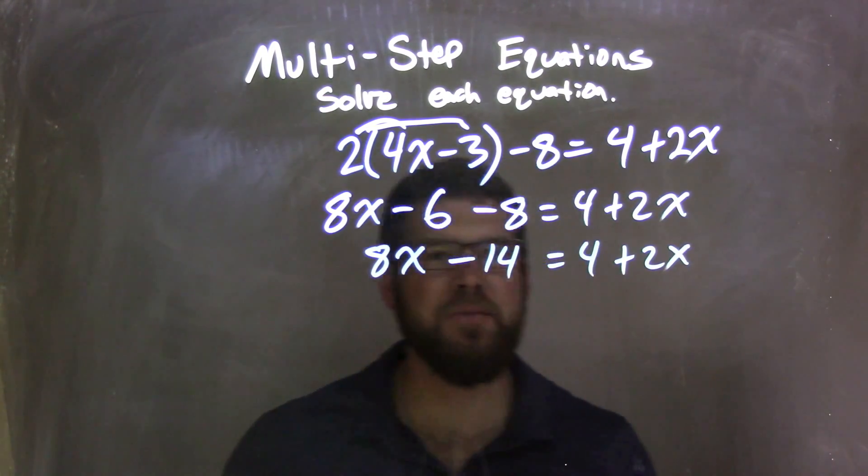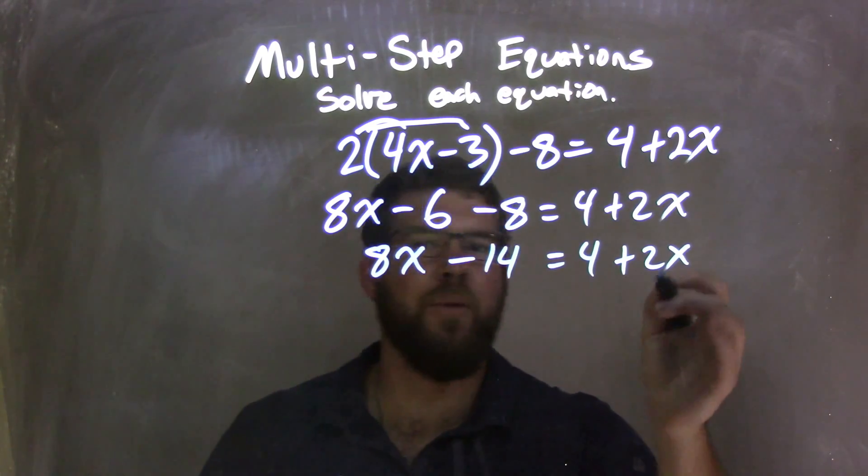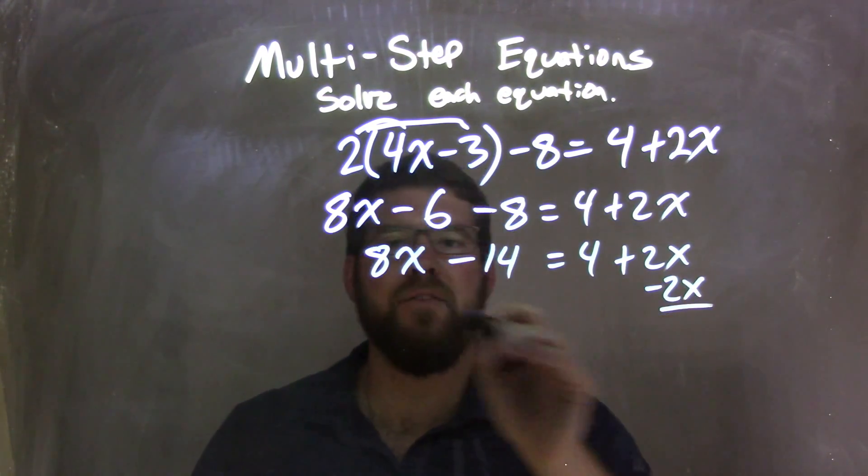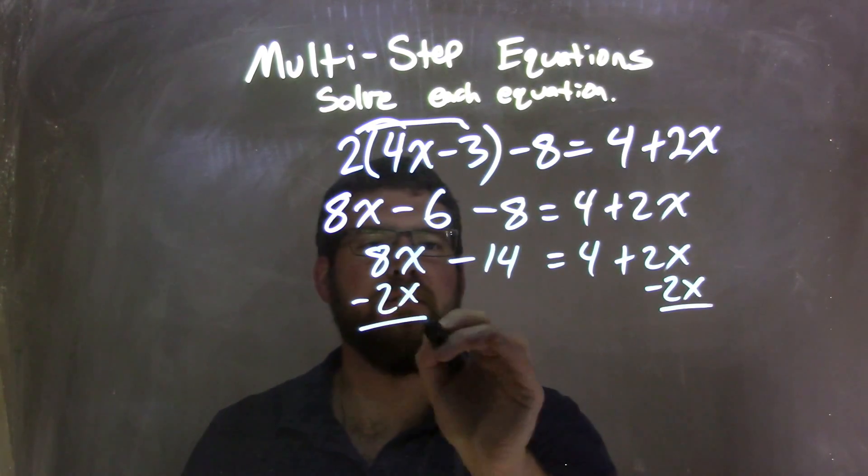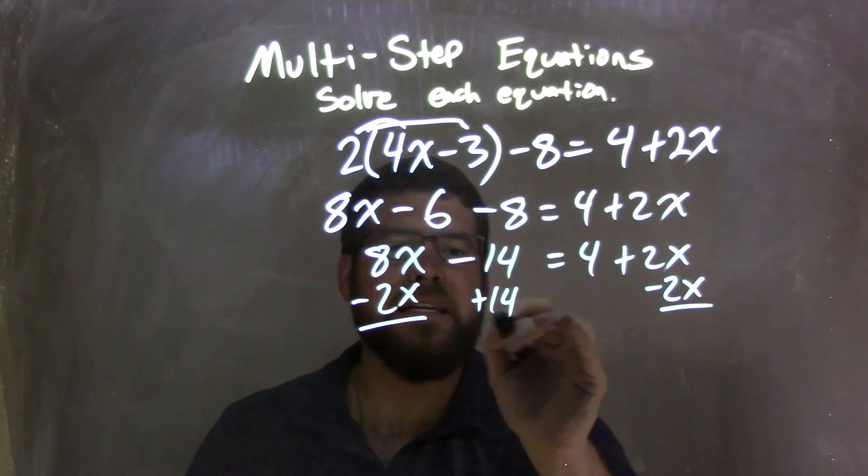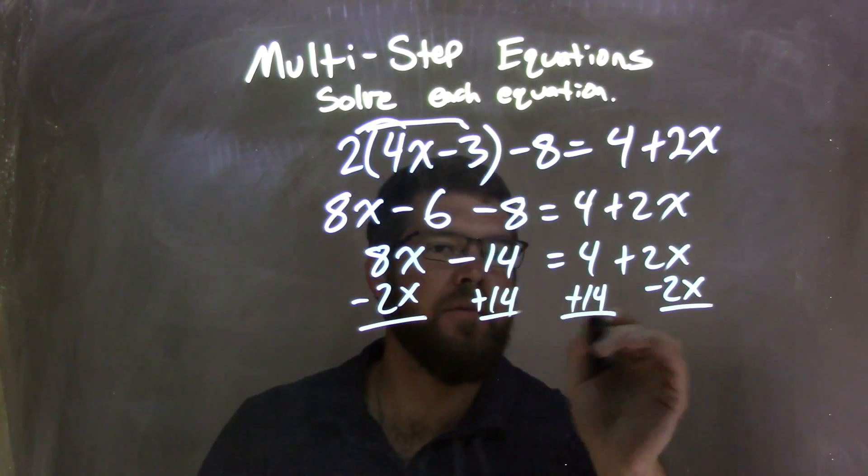Well, let's bring my like terms one side to the other. I'm going to bring the x's to the left now. 2x over here, subtract the 2x. I'm going to add a 14 to both sides.